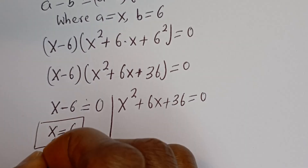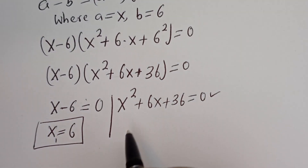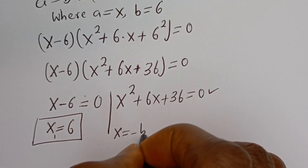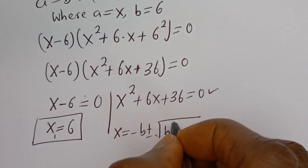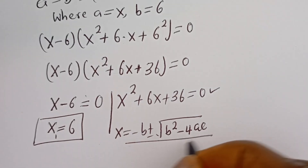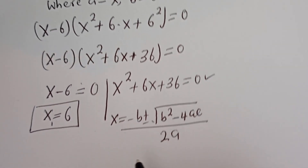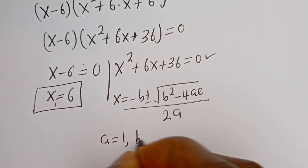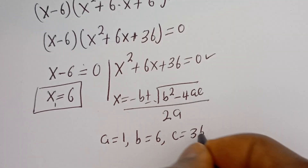Let's call this x₁. From the second case, this is a quadratic equation. Let's solve this using the quadratic formula: x is equal to minus b plus or minus square root of b squared minus 4ac, divided by 2a. From this equation, a is equal to 1, b is equal to 6, c is equal to 36.